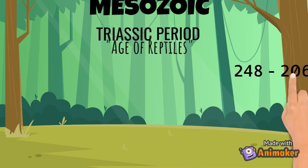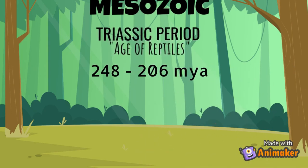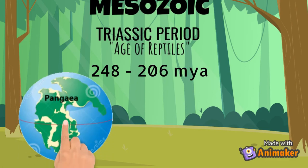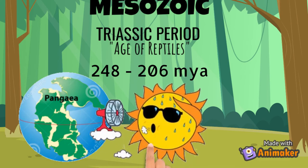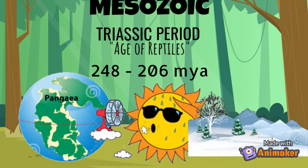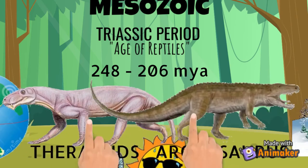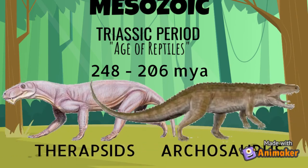The first period in the Mesozoic era is the Triassic period, which occurred 248 to 206 million years ago. Most of the continent was concentrated in the supercontinent Pangea, having a generally very dry climate with hot summers and cold winters. Reptiles were very dominant.